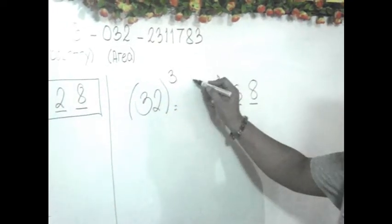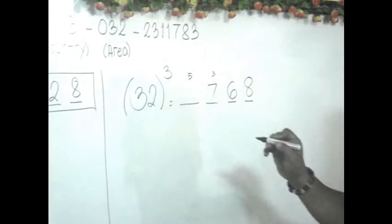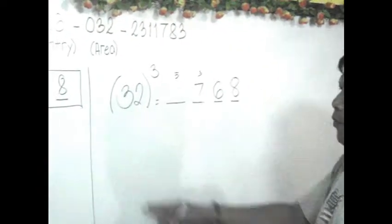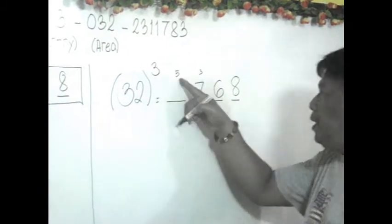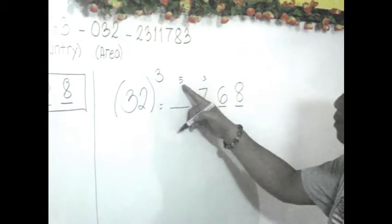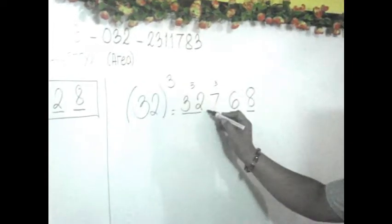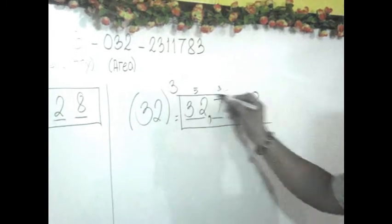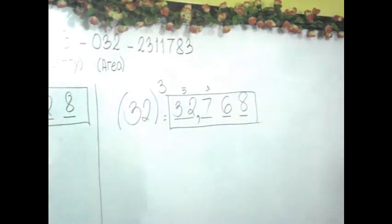Step 4: cube the first term. 3³ = 27, plus the carried 5 = 32. So the answer for 32³ is 32,768.